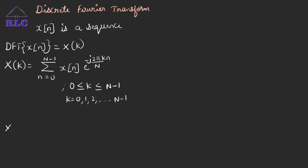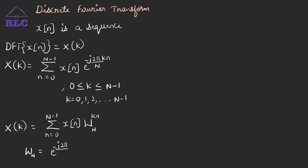The DFT can also be expressed as x of k equals summation n ranging from 0 to N-1, x of n into W_N to the power of kn, where W_N is called the twiddle factor given by e to the power minus j 2 pi by N. It is also called the phase factor.